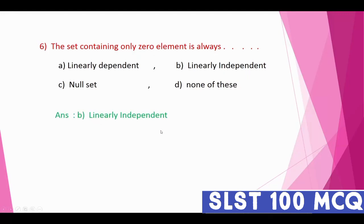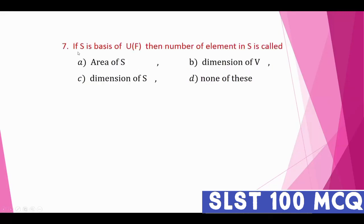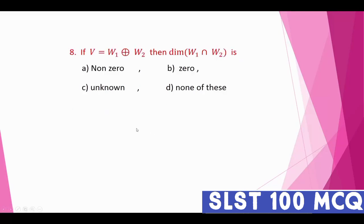Question number seven: if S is a basis of a vector space V over a field F, then the number of elements in S is called the dimension of V — not dimension of S, but dimension of V. That is the correct option.